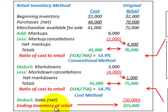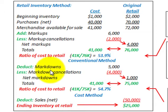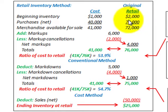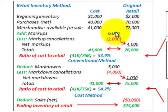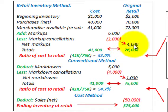First we have to determine our ending inventory at retail, which includes determining whether we have some markups or markdowns in our inventory prices. We had beginning inventories and purchases for the period. Our merchandise available for sale is $72,000. We have markups of $6,000 and markup cancellations of $2,000, so our net markups are $4,000.